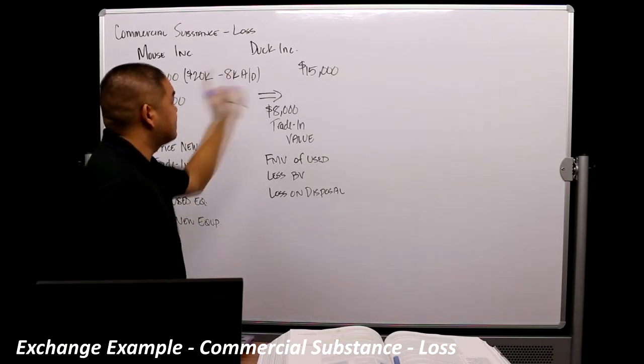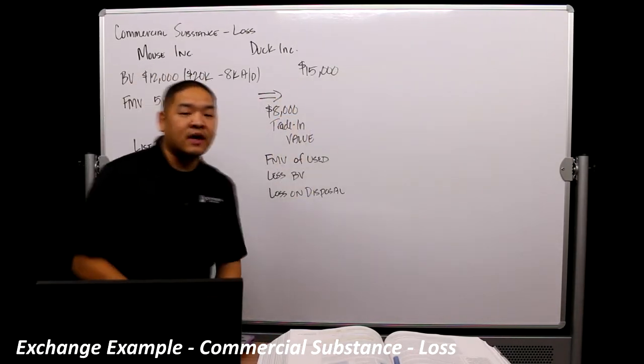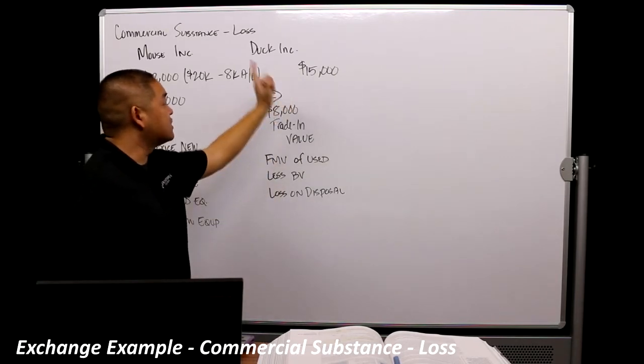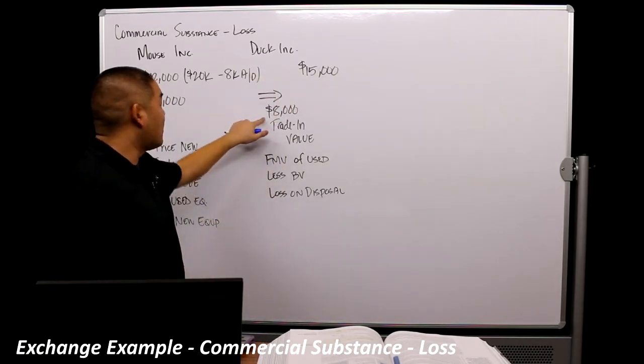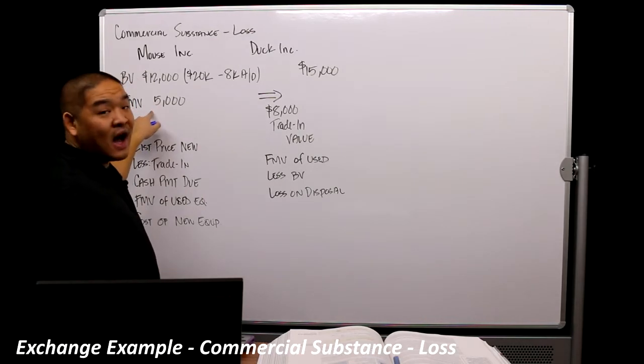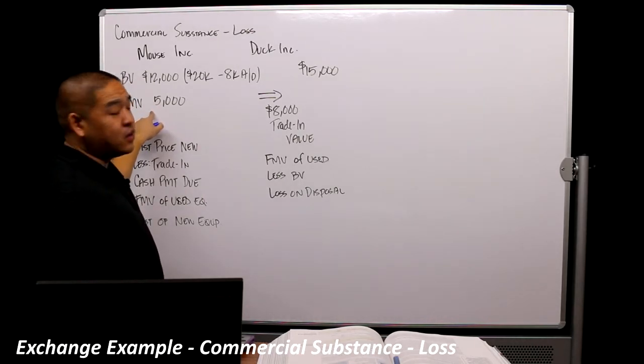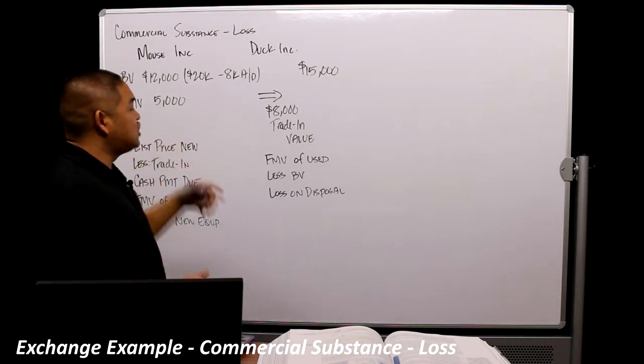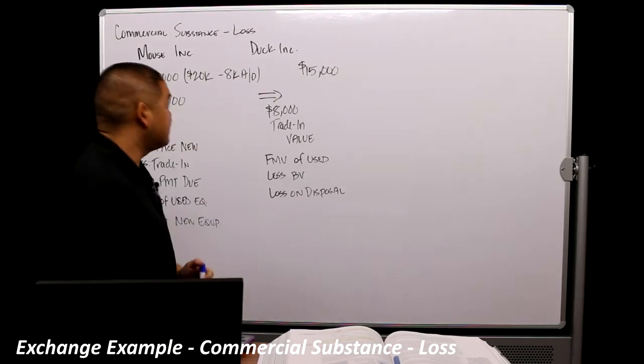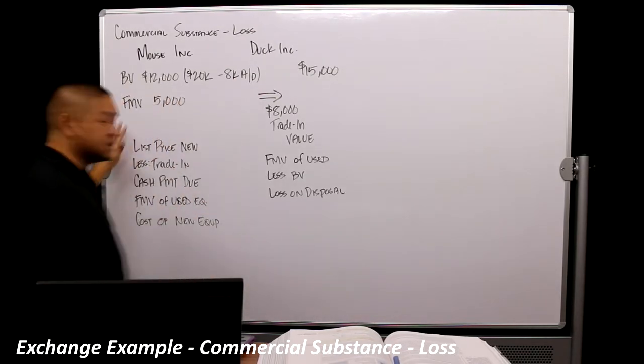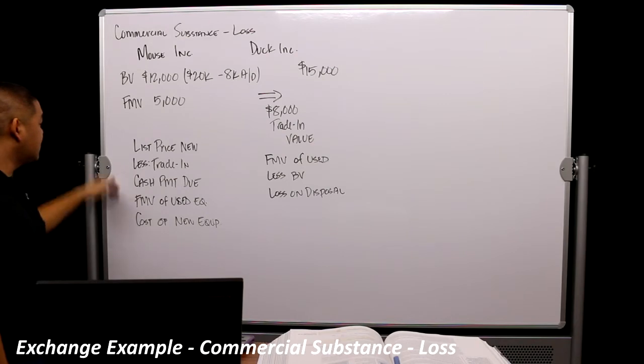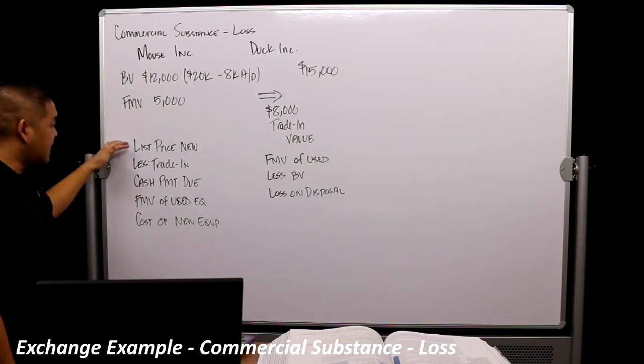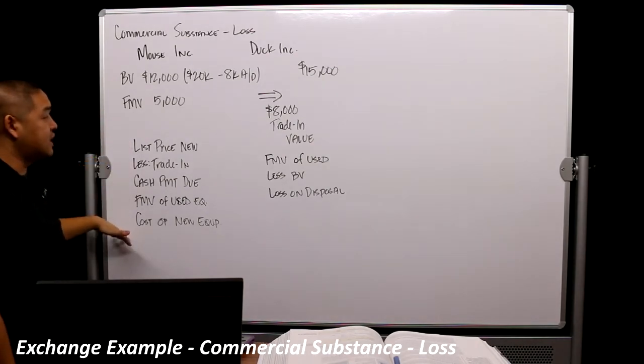So what we need to do is we need to figure out what the cost of the new equipment. Now, I know what you're saying. You're saying, well, the cost of the equipment is $15,000. Well, GAAP says it's $15,000, but Donald Duck was able to give him more than he actually got or worth of his equipment. So we can't just barely do that. So we have this way of calculating it here. We'll go through each one of them and kind of figure out what that cost of that new equipment is.